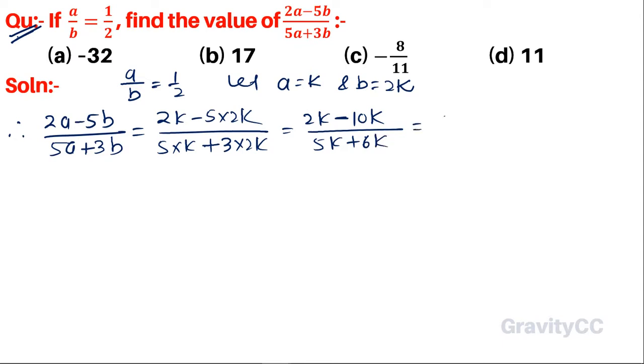Cancel k from numerator and denominator to get -8/11. That's the answer. Second method: